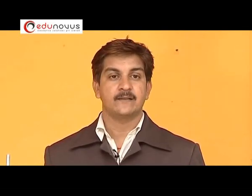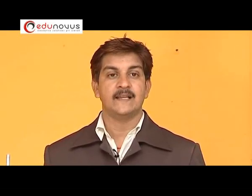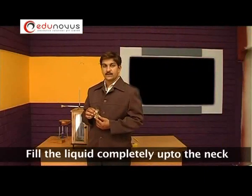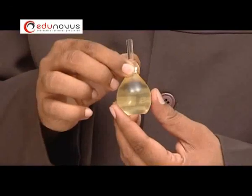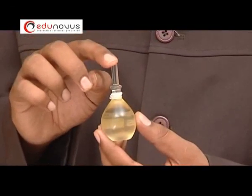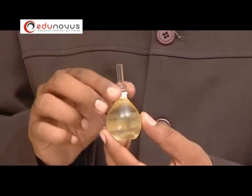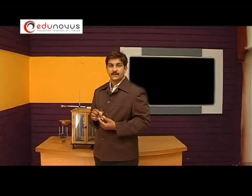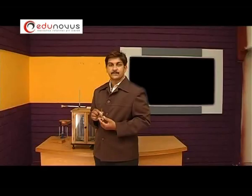Now, determine the mass of the specific gravity bottle with the liquid filled using the physical balance. Fill the given liquid completely and close the mouth with the stopper. Any amount of liquid that is expelled should be cleaned with a blotting paper. Then find the mass of the given liquid with the specific gravity bottle using the physical balance.